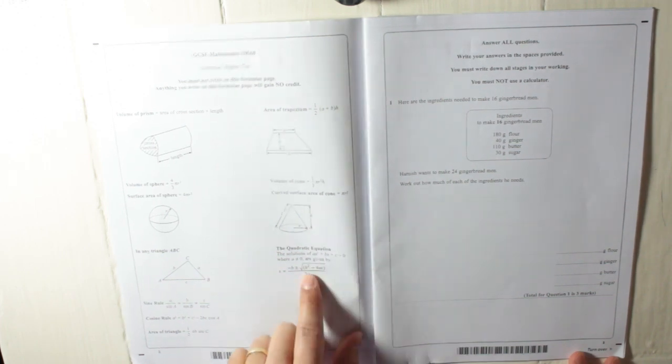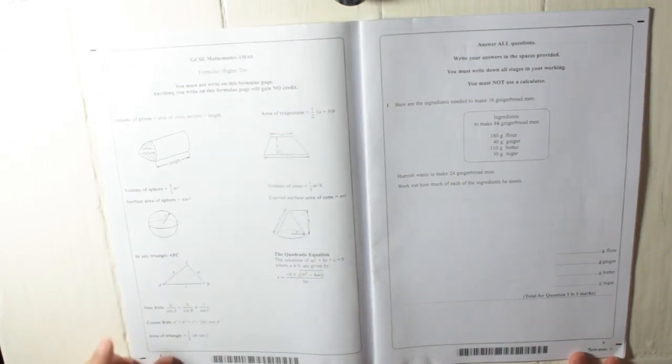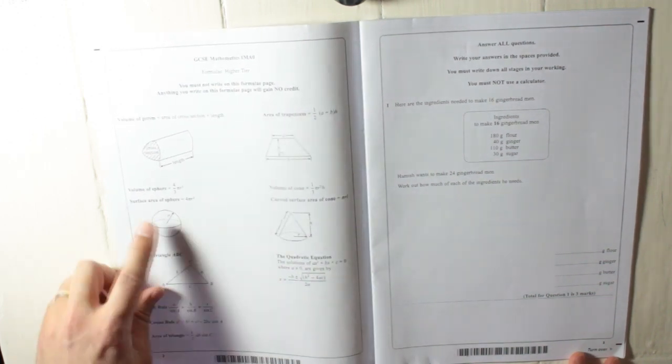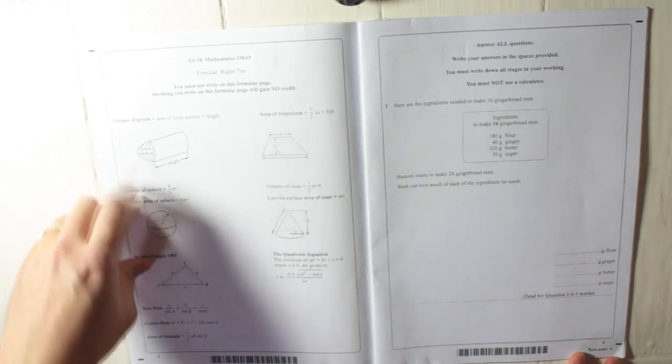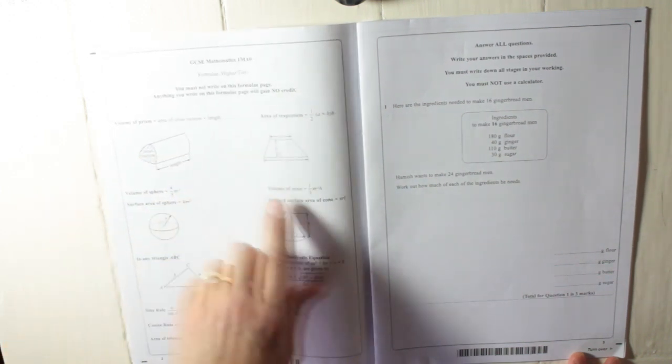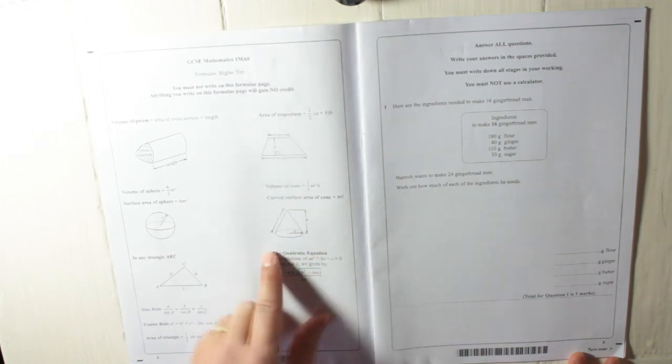We've got our formulas at the front: quadratic equations, sine rule, cosine rule, area of a triangle, surface area of a sphere, volume of a sphere, volume of a prism, area of a trapezium, volume of a cone, curved surface area of a cone.